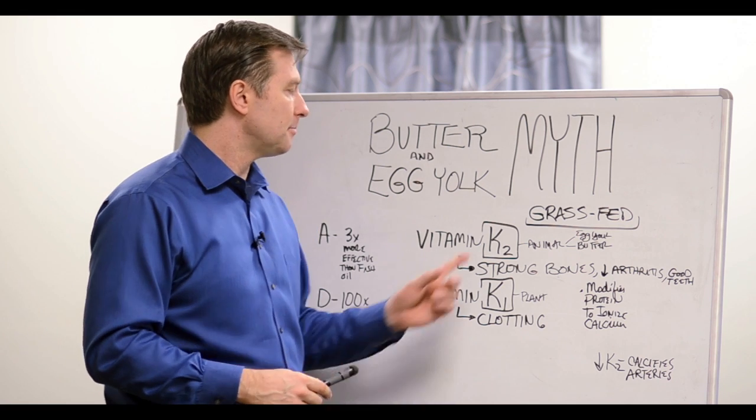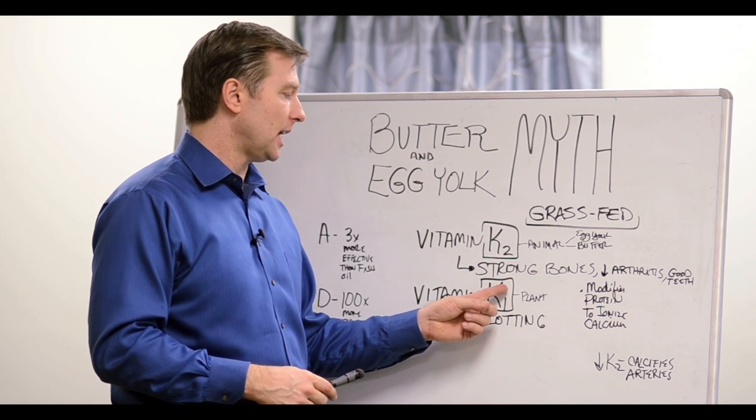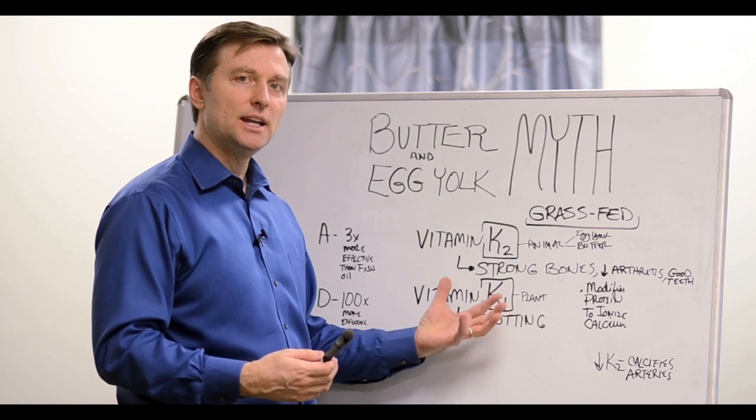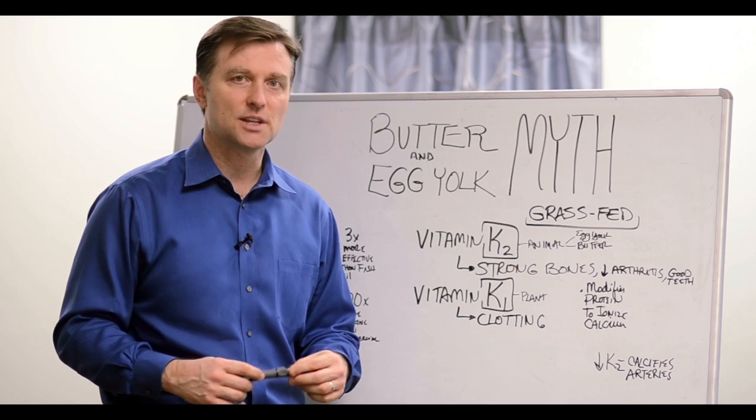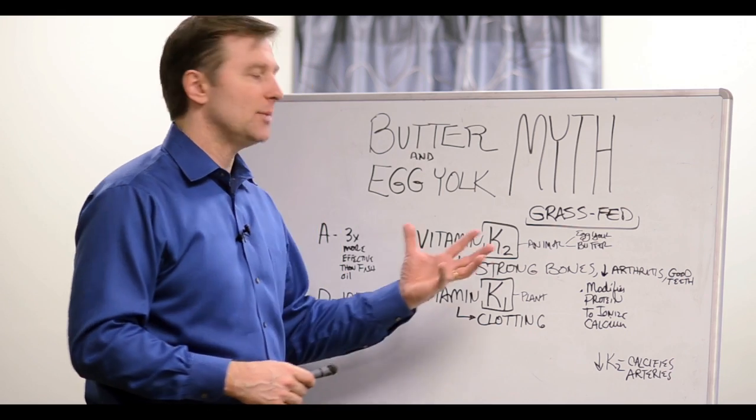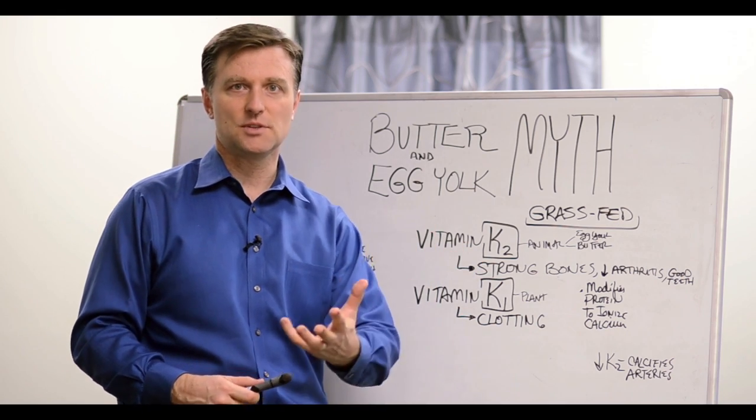So basically, the source of vitamin K1 is from plant sources like spinach and vegetables, but you also have vitamin K2, which doesn't come from vegetables. It comes from the animals that eat the vegetables, especially the animals that eat the grass.